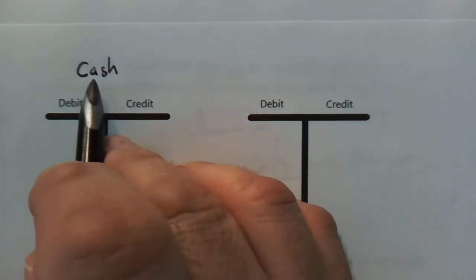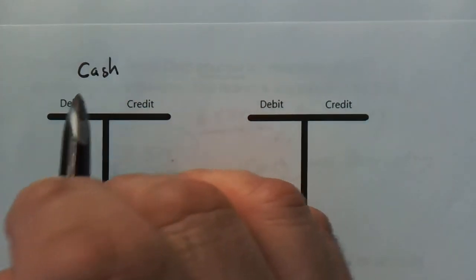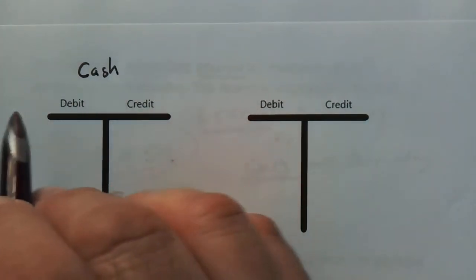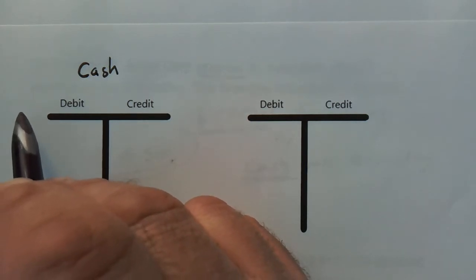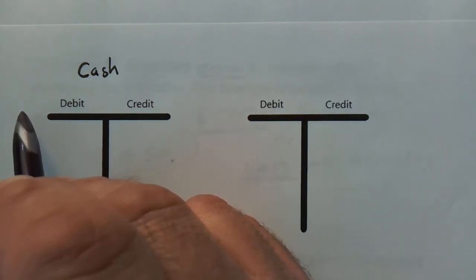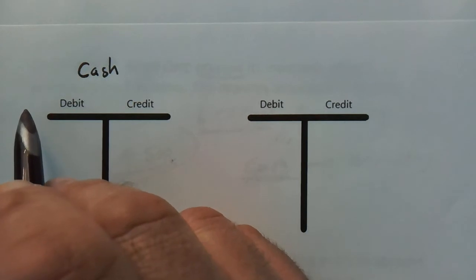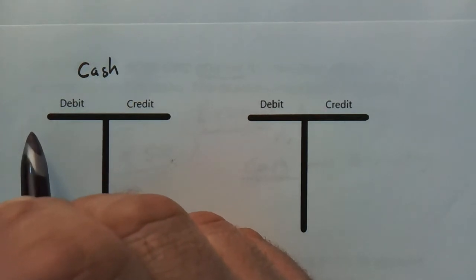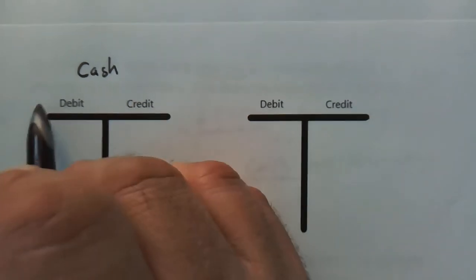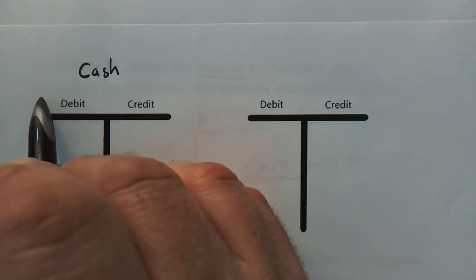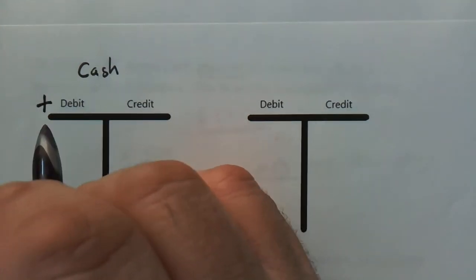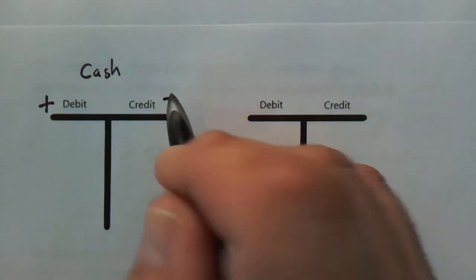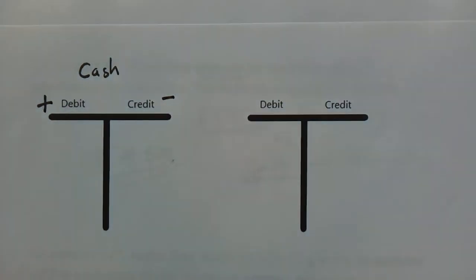Cash is an asset. So as you recall, I've done this in some other videos, and if you don't recall, I'm going to put a card here for you to click on if you want to go back and refresh when it's a debit or when it's a credit. But since cash is an asset, we're going to increase that with debits and decrease it with credits.